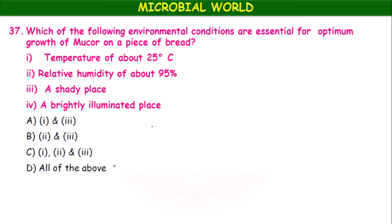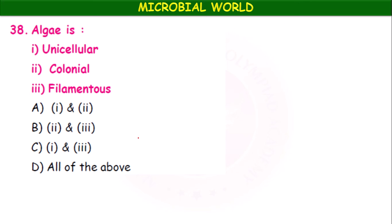Which environmental conditions are essential for optimum growth of Mucor on a piece of bread? Temperature of about 25 degrees centigrade, relative humidity of about 95%, and a shady place. These conditions are required for fungal spores to germinate. The answer is option C — temperature 25°C, humidity 95%, and a dark or shady place. Algae may be unicellular, colonial, or filamentous — all of the above.